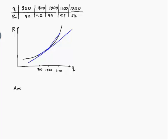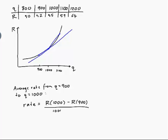So, average rate from Q equals 900 to Q equals 1000. So, that will be the rate is equal to R of 1000 minus R of 900 divided by 1000 minus 900. So, the change in Y divided by the change in X. Now, R of 1000 is 55, R of 900 is 52, and that's 100. So, 55 minus 52 is 3, so that would be 0.03.